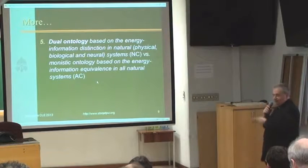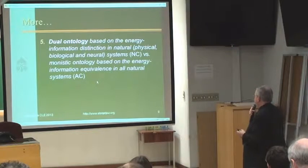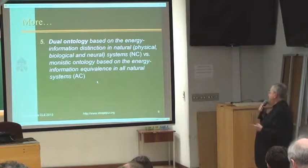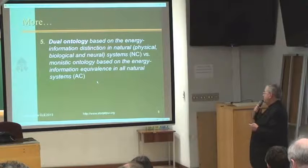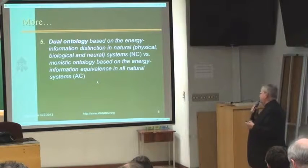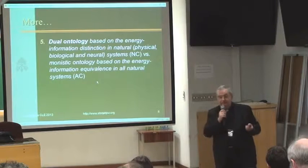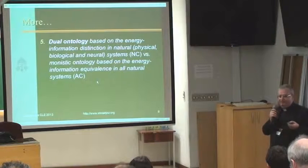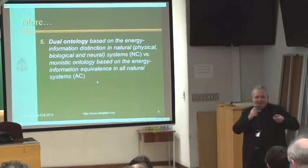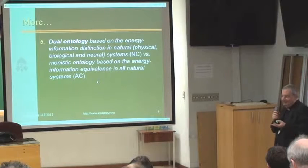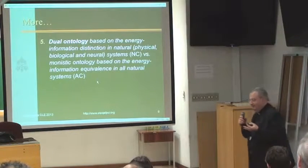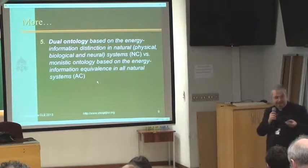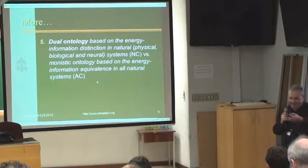Fourth: intentional, object-directed, pre-symbolic computation based on chaotic dynamics in neural computation, versus representational, solipsistic-symbolic computation — solipsistic in the sense of Carnap — based on linear dynamics, typical of the early artificial intelligence approach to cognitive neuroscience according to the algorithmic computation paradigm. And then the point I want to stress now: dual ontology based on the energy-information distinction in natural, physical, biological, and neural systems in natural computation, versus monistic ontology based on energy-information equivalence, because if you have a linear system, the distinction between energy and information is only a way of speaking.